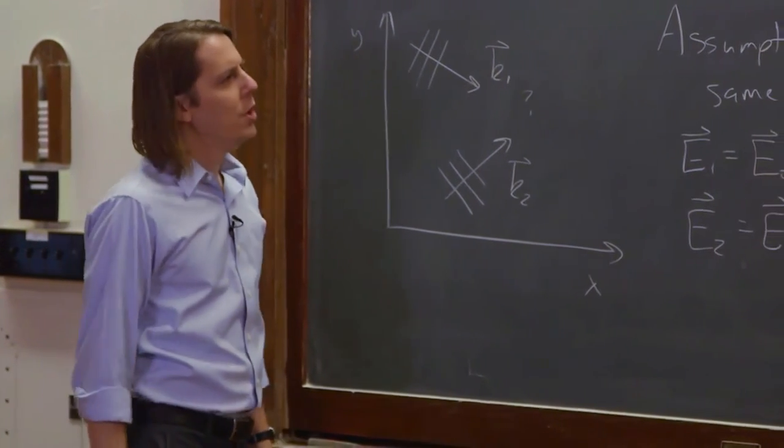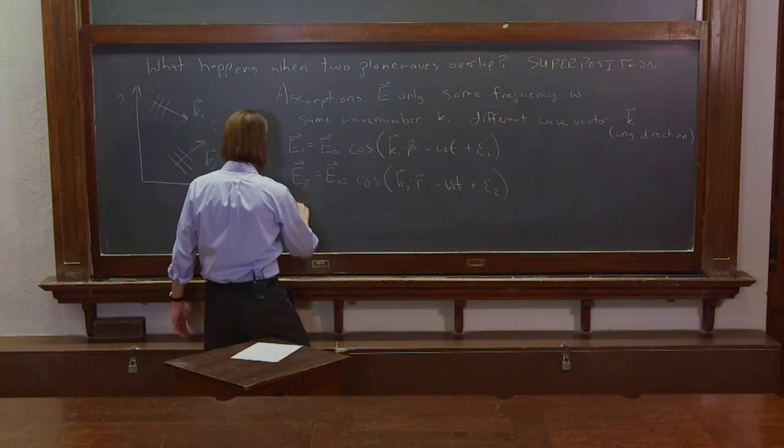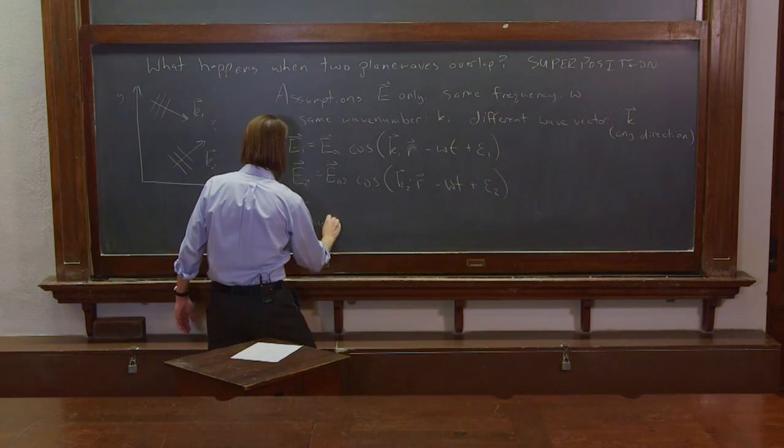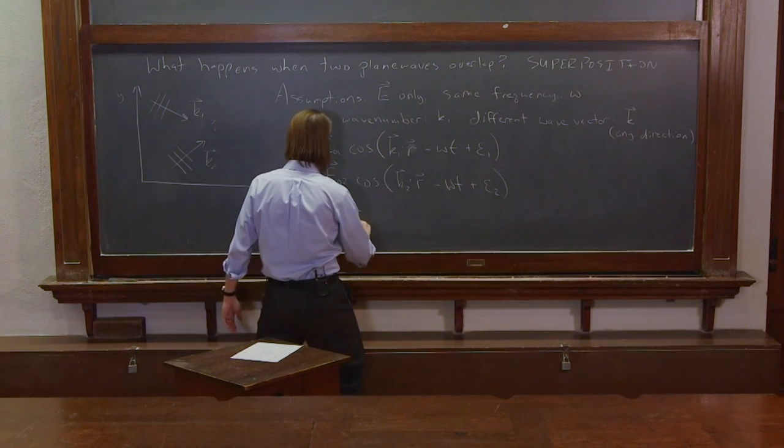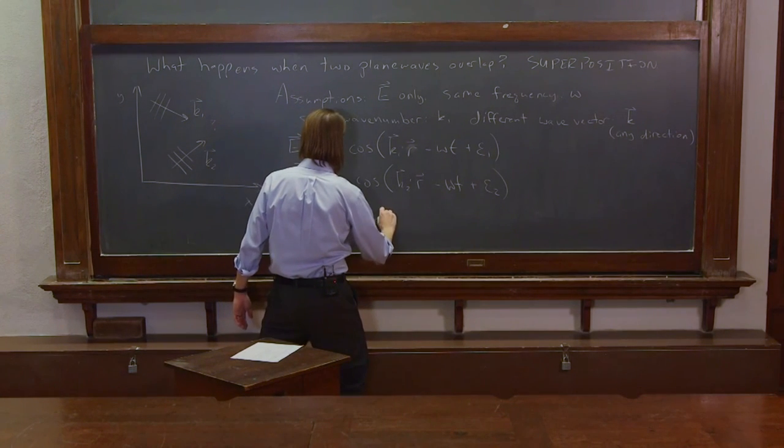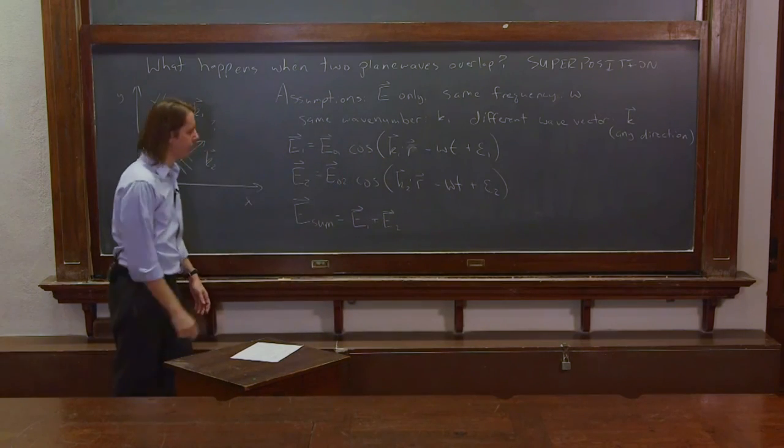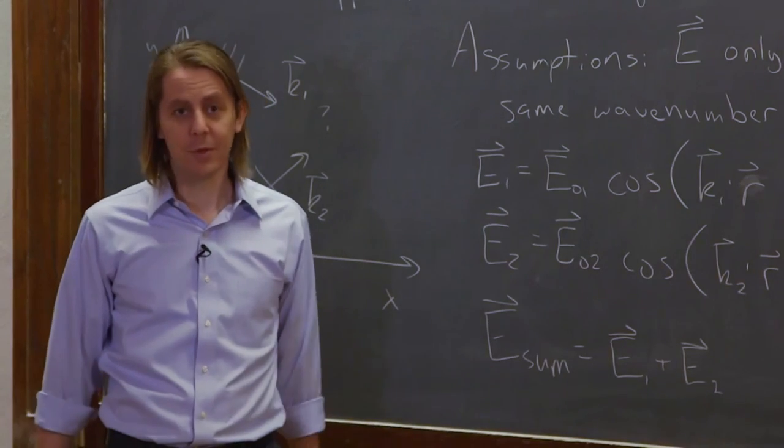All right, so if we do superposition, what does that mean? That means that the field we get is just the sum of the two. This is what we're looking for. E sum is E1 plus E2. How bad could it be? You'll find out.